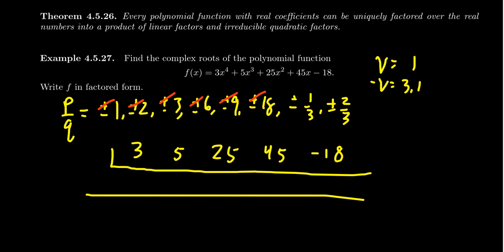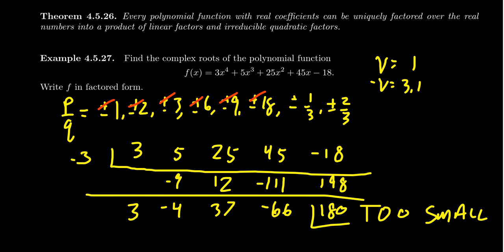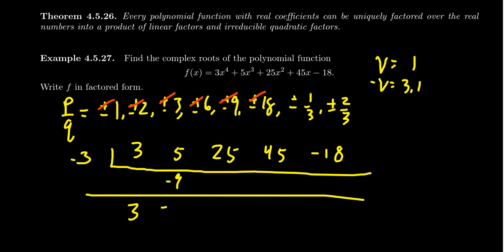Let's try x = −3. Bring down the 3: 3×(−3)=−9, +5=−4, ×(−3)=12, +25=37, ×(−3)=−111, +45=−66, ×(−3)=198, −18=180. The signs along the bottom are alternating — the lower bound theorem applies, telling us nothing less than −3 will work. So we can eliminate −6, −9, and −18 as well, leaving us a much smaller list.